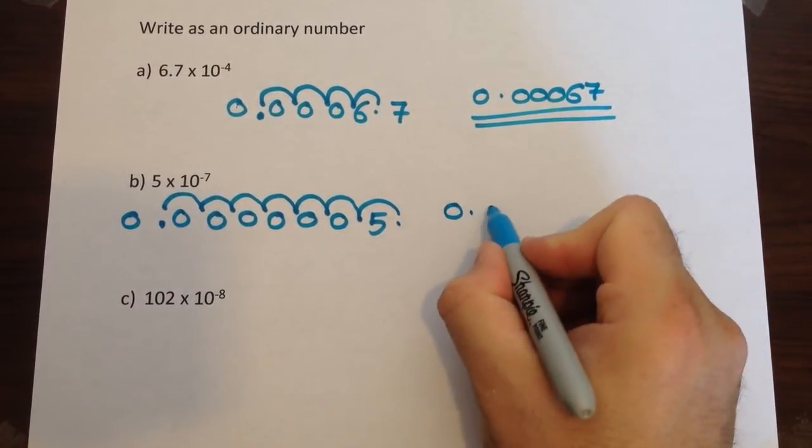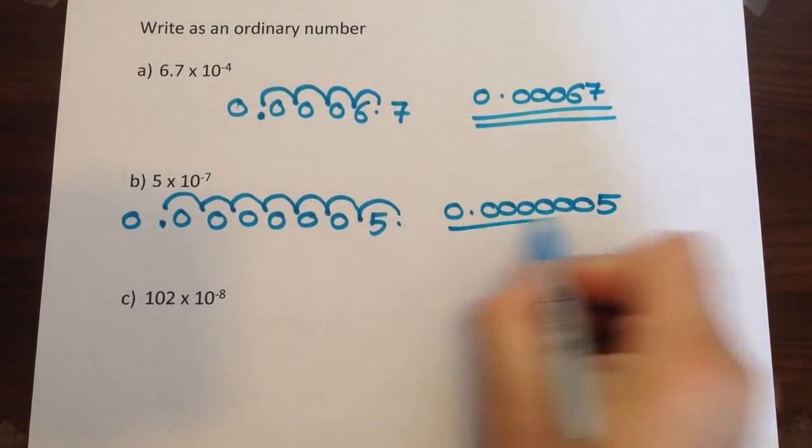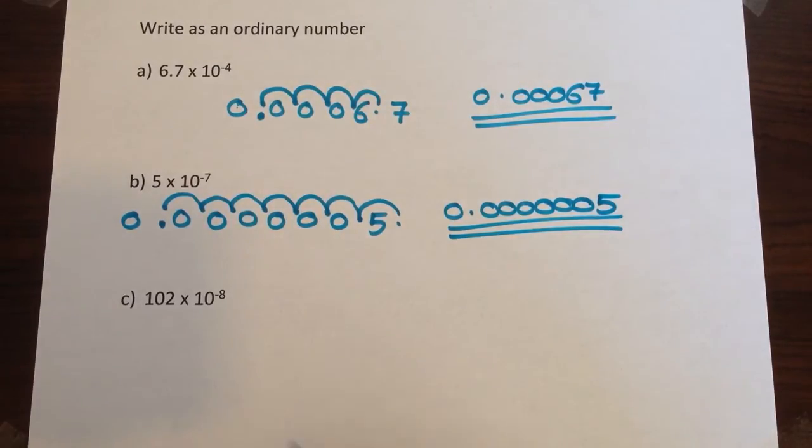Zero point one, two, three, four, five, six, five. And this last one looks a bit strange as well.